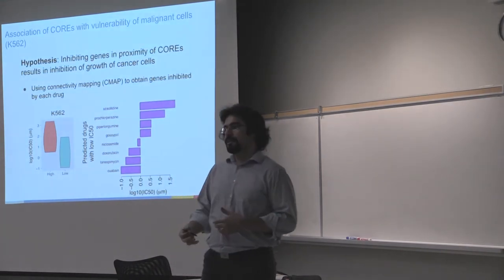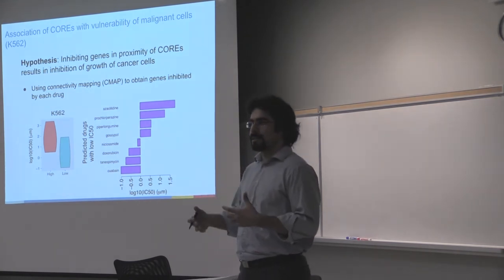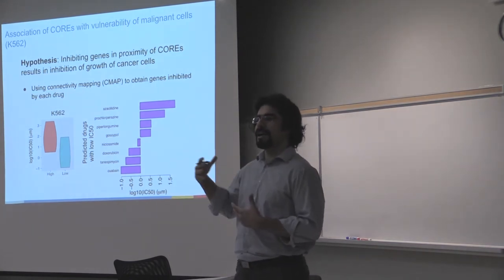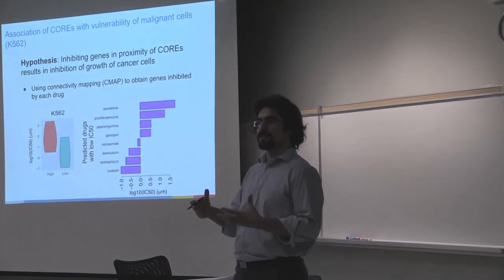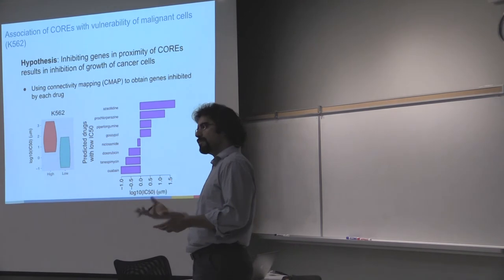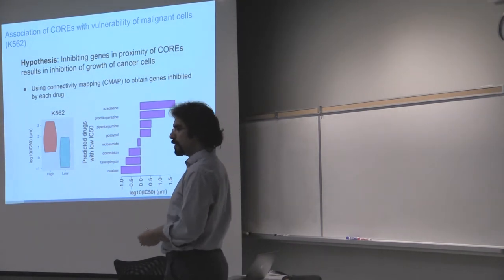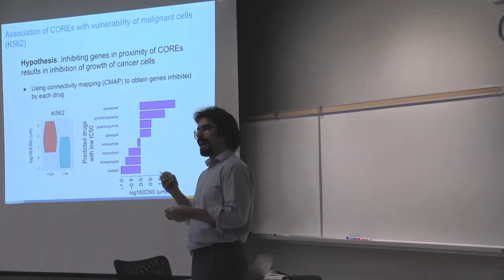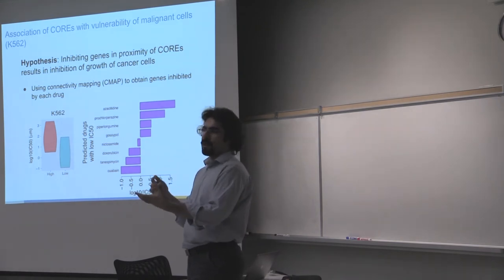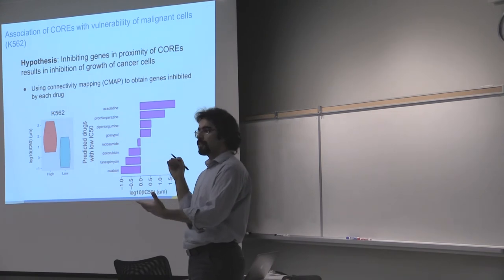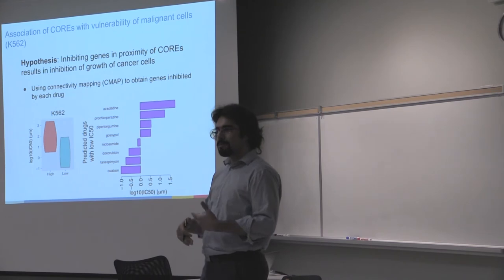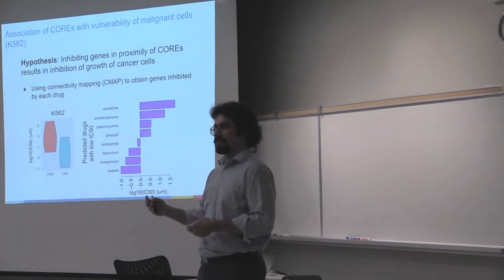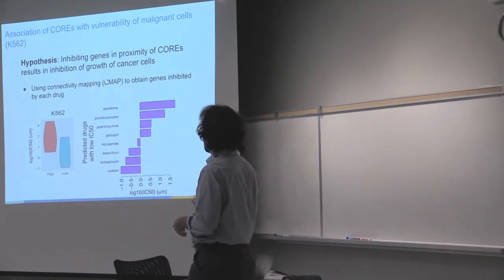Upon that, we assume and we show that CREAM identifies regions in proximity of highly active genes, essential genes, and we are assuming that the cores identified by CREAM are important. So we hypothesized that if we use these regions or these genes as the base for our drug response prediction, and assuming that if we target or inhibit these genes which are in proximity of cores, maybe we can inhibit growth of cells. This was our hypothesis.